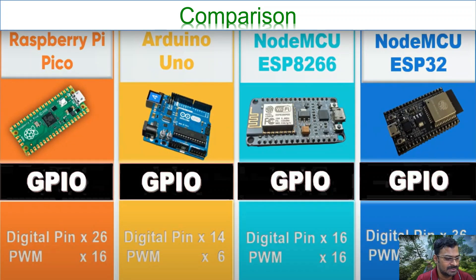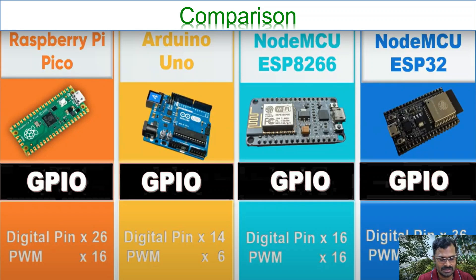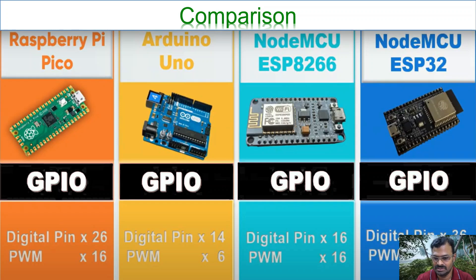For GPIOs, Arduino Uno has 14 digital pins with 6 PWM and 6 analog pins. Raspberry Pi Pico has 26 digital pins with 16 PWM-capable and 3 analog pins. NodeMCU ESP32 has 36 digital pins with 16 PWM pins and more analog pins available.